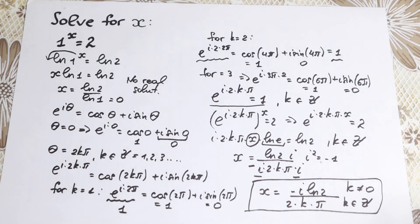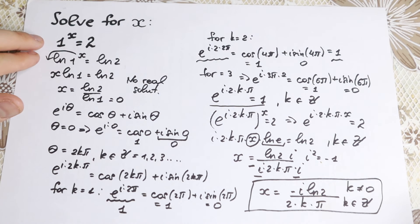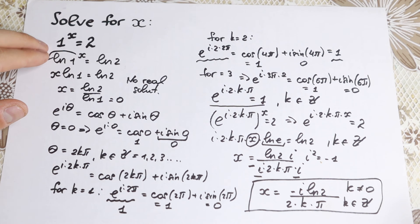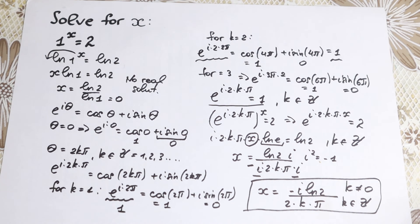This is my approach to this interesting problem. A lot of students ask about when k equals 0 or negative numbers — this isn't a fully general solution, but it captures the complex roots. As you can see, 1 to the x equals 2 has no real solution — we all know 1 to the power 100 equals 1 — but we found a complex root.